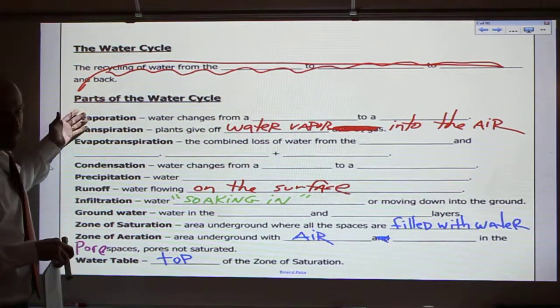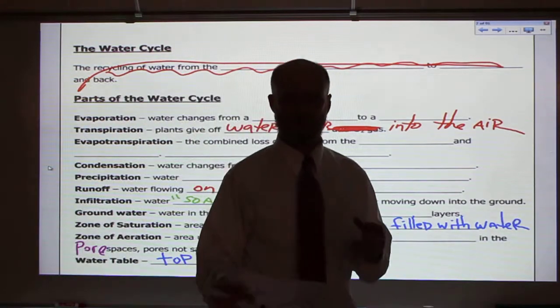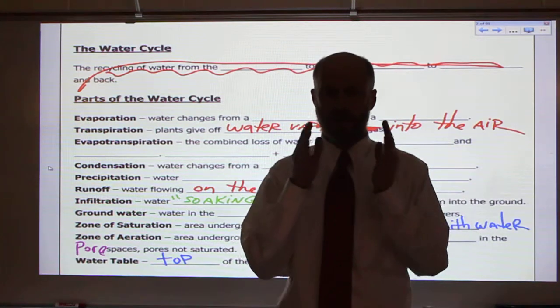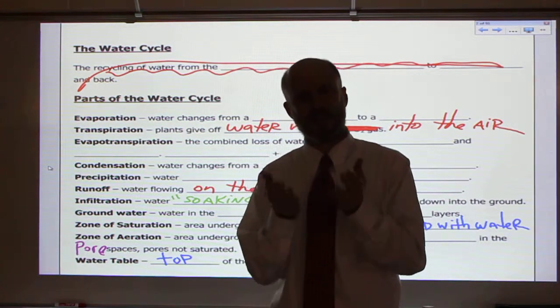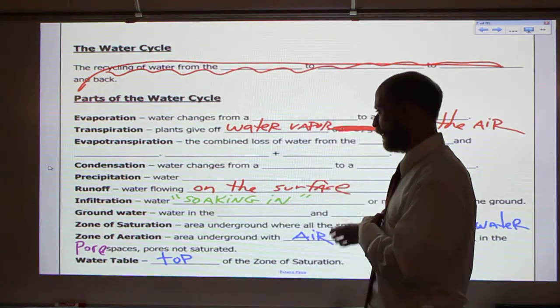Runoff, so the rest of the stuff I think you know generally, but when rain hits the ground, it really does two things. It's either going to soak into the ground or it's going to stay on the surface and flow downhill. So it's staying on the surface, not going into the ground. The amount that goes downhill is called runoff, water flowing on the surface.